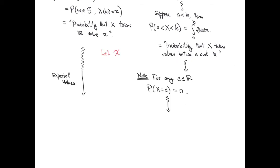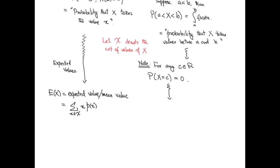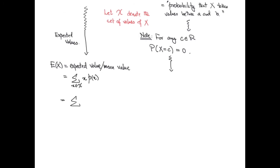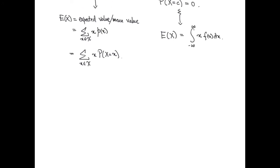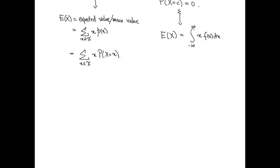We next talk about the expected value of a random variable. Let script X denote the set of all values of x. Then the expected value of x or the mean value of x when x is discrete is the sum x times px where x varies over script X. When x is continuous, the expected value is the integral from minus infinity to infinity of x times fx dx.